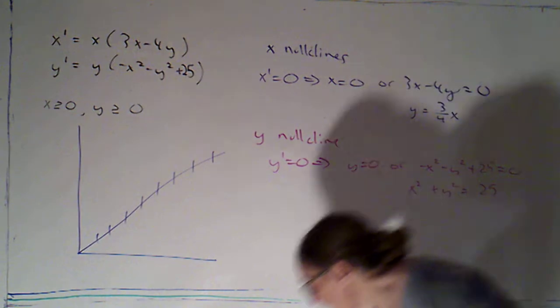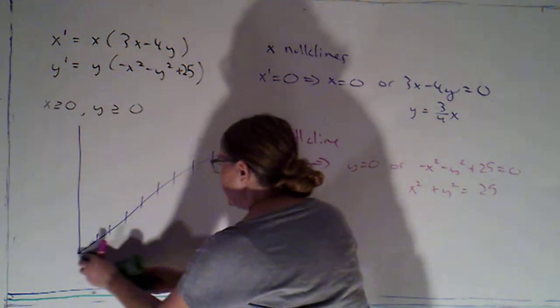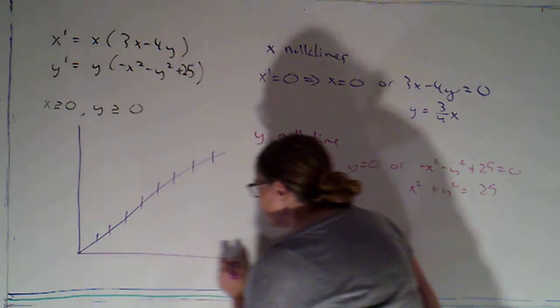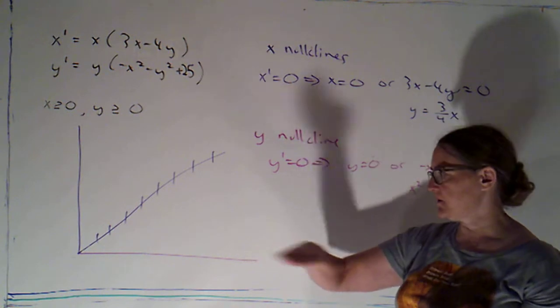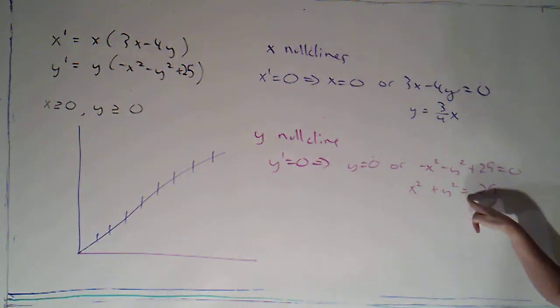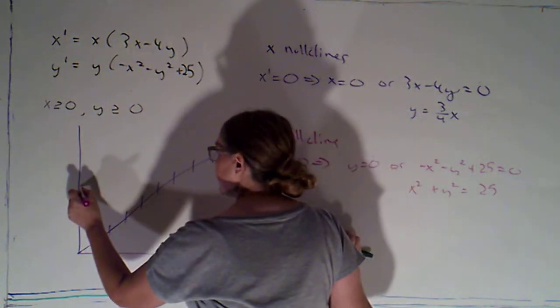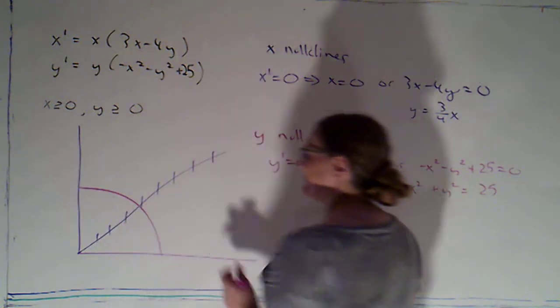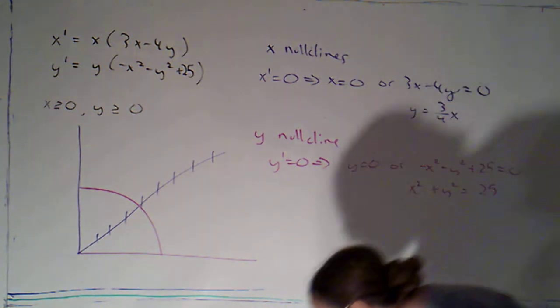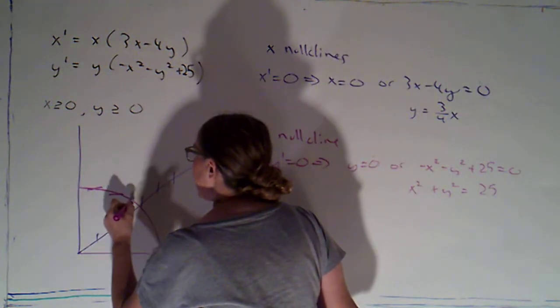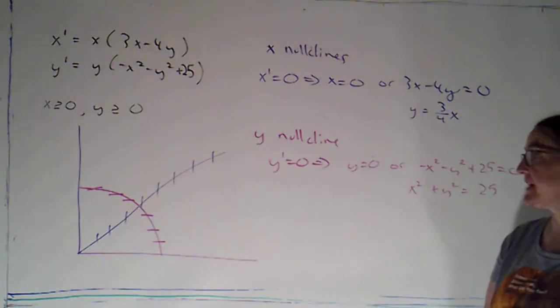Okay. So y equals zero, that's the x axis, so let's just make that pink. Now when y prime is zero, we're not going up or down, so we've got a horizontal tangent. This is just the equation for the circle of radius five. So I'm going to just draw the quarter circle of radius five that's in the first octant. And I can go ahead and draw in along that quarter circle, we're going to have horizontal tangents.